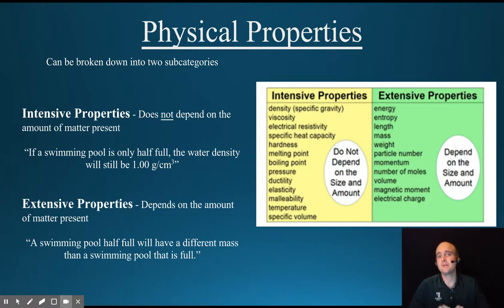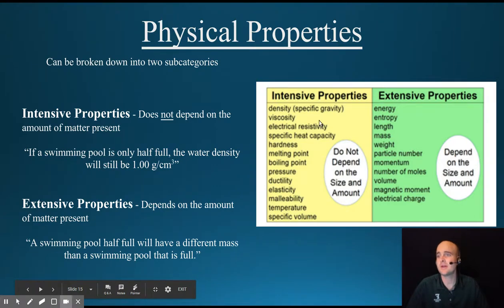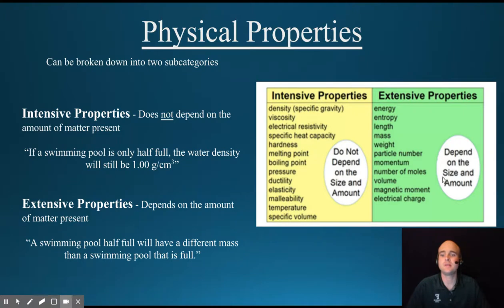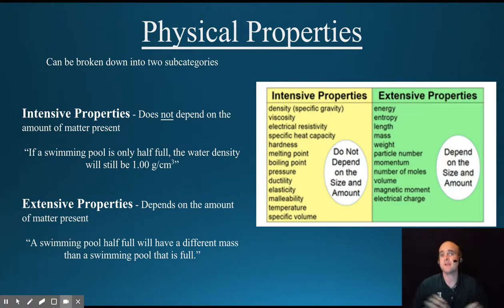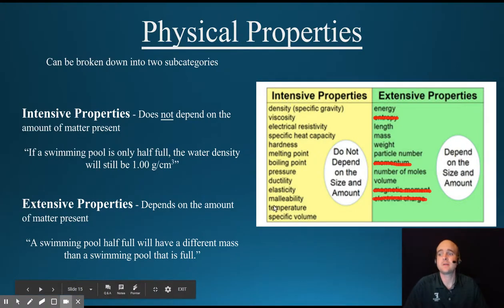The physical properties can be broken down into two subcategories called the intensive properties and the extensive properties. The intensive properties do not depend on the size or the amount, and there are a lot of examples here, such as density, viscosity, electro-resistivity, specific heat, hardness, melting point, and boiling point. The extensive properties do depend on the size and amount. Some of these are physics terms that are just beyond the scope of our course, but we'll get a chance to witness all of the intensive properties and I'll talk about them individually later.